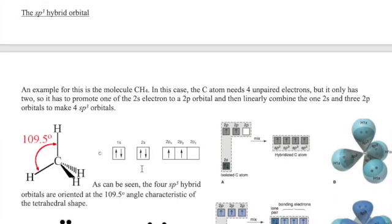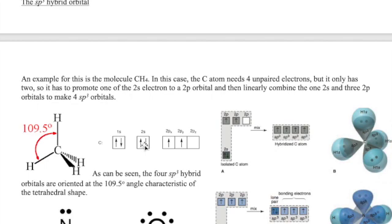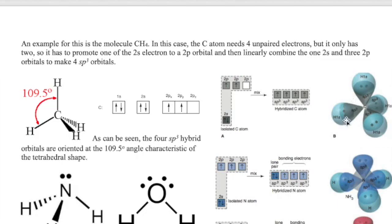So in order to explain the bonding we're going to have to promote one of the 2s electrons into that last empty 2p orbital and then hybridize all four of them, 1s and 3p, to form four sp³ hybrid orbitals. The name again suggests what atomic orbitals are used to make it: 1s and 3p orbitals. Now what does that hybrid orbital look like? Well it has four lobes as you might imagine and the four lobes are oriented like a tetrahedral structure. 109.5 degrees is the angle between one lobe and the other lobe. So you can then explain the bonding in methane as a result of the overlap between an sp³ orbital with a 1s orbital from the hydrogen atom.